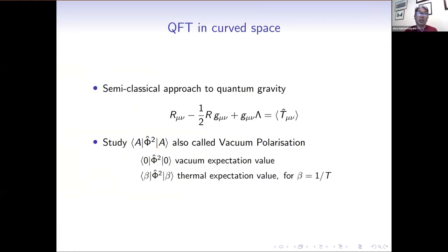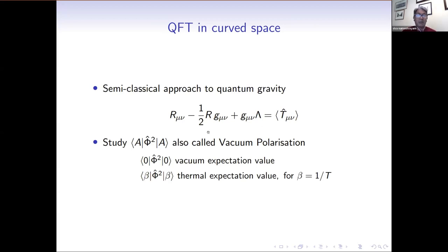We work in the semi-classical approach to quantum gravity, whereby the metric is kept fixed in classical form, and we study a quantum field propagating on this background metric. Whilst we will be studying the expectation value of the stress-energy tensor in due course, for the time being we've been focused on the expectation value of the square of the scalar field in a state A,